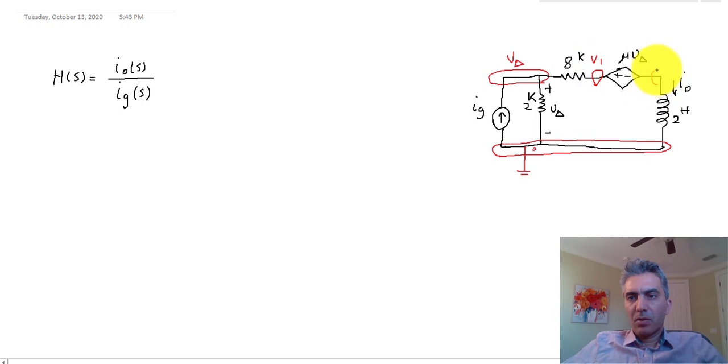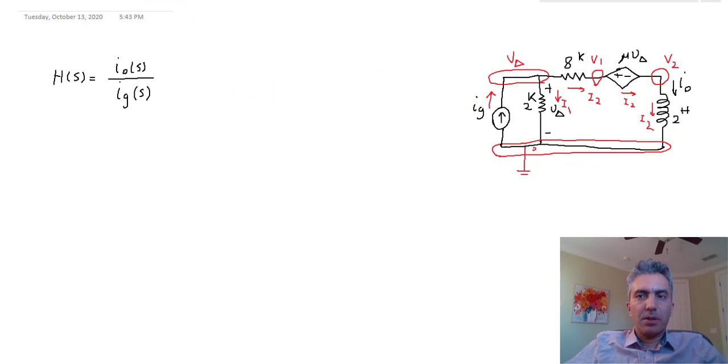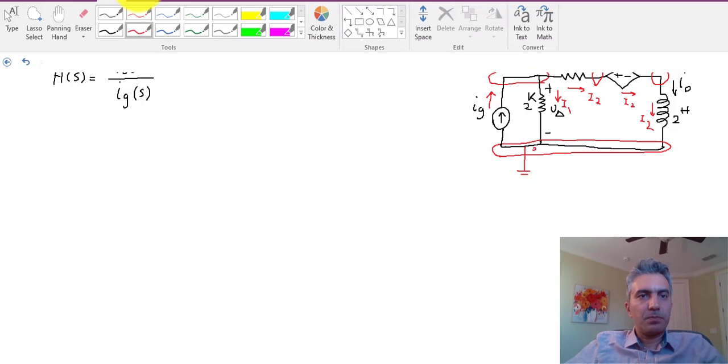This node here I can call V1, and the node here I'm going to call V2. Now as for the currents, obviously this is I_G, this I'm going to call I1, and then we have I2 that goes through both of these other two components.